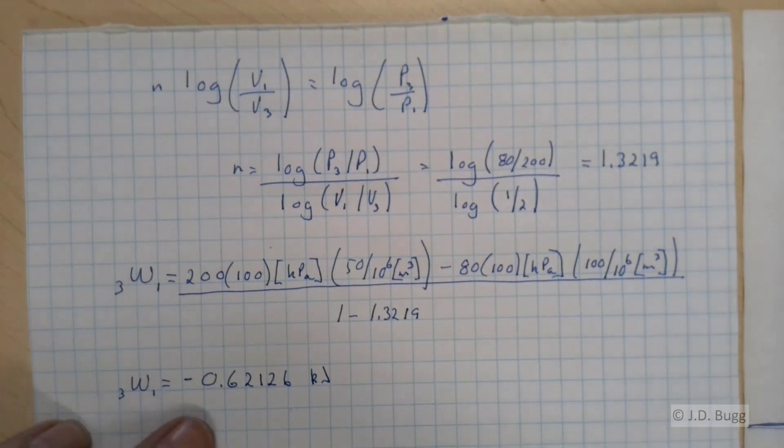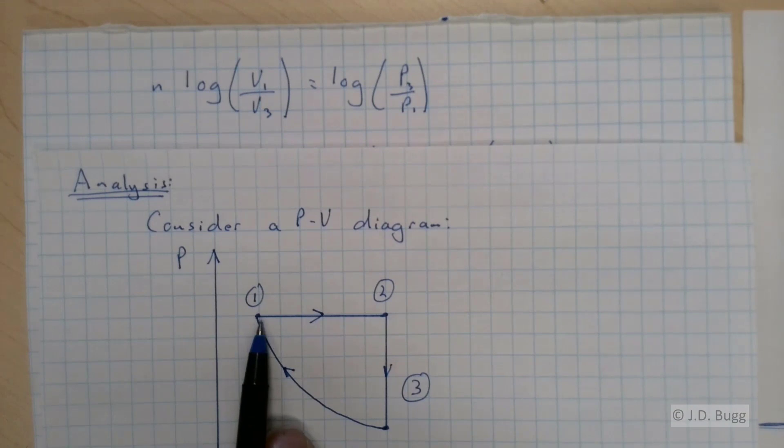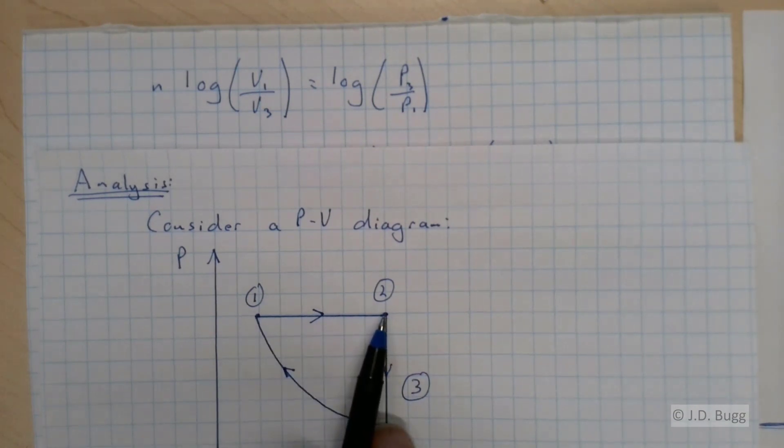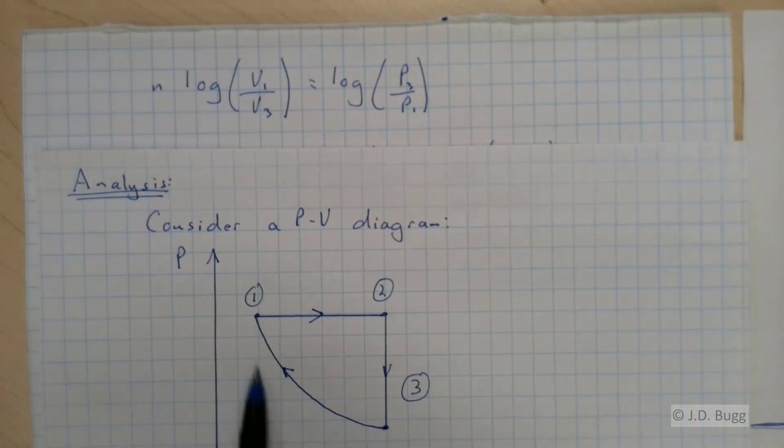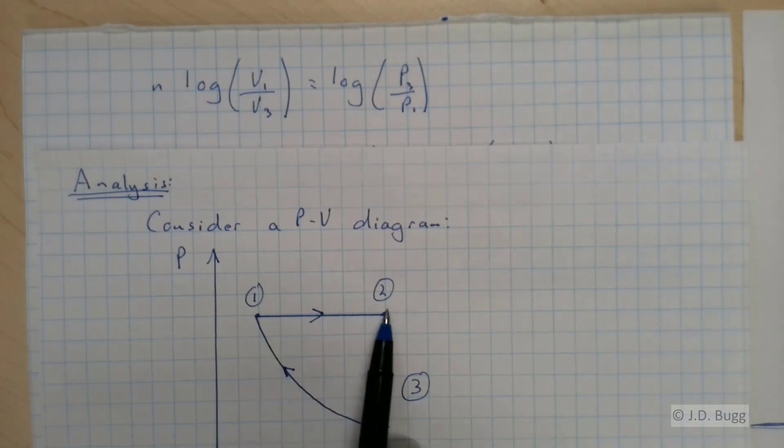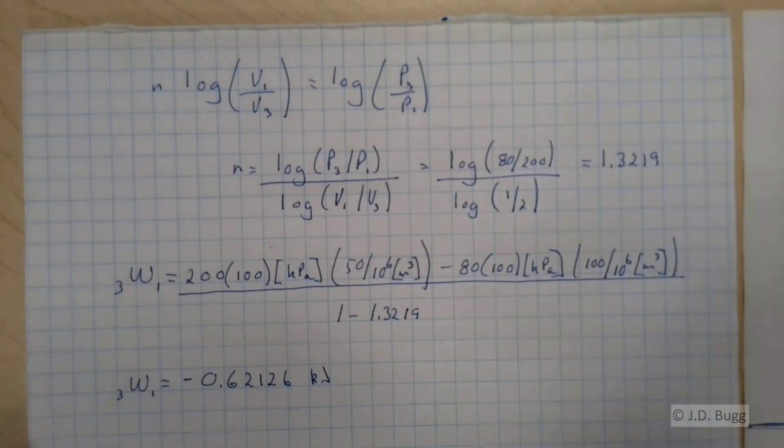And if we just go back to our diagram here and see if that makes sense, remember the work going from 1 to 2 was positive 1. That makes sense. It's an expansion moving from left to right. The work going from 2 to 3 should come out negative because it's a compression, and it should certainly be less in magnitude. Remember the work is the area underneath the curve.